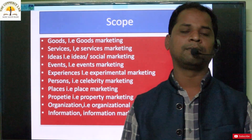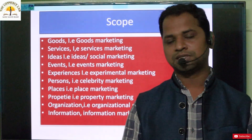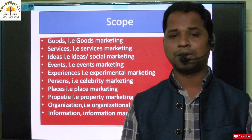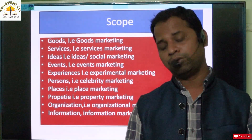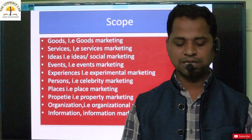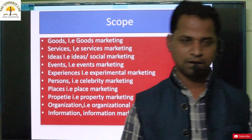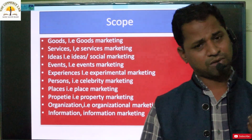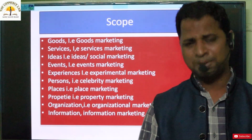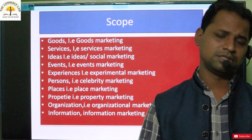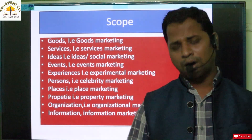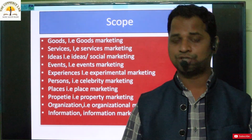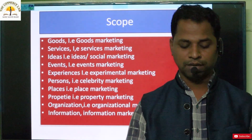Persons marketing is celebrity marketing. Different celebrities — film stars or cricket stars like Virat Kohli, Amitabh Bachchan, Shah Rukh Khan, Priyanka Chopra, Katrina Kaif, Kareena Kapoor — do marketing. That is celebrity marketing. Places can also be marketed. The government wants to develop tourism, so a particular place has to be promoted. For example, Amitabh Bachchan plays an important role in promoting Gujarat tourism. Other people also promote particular places or states. That is place marketing.